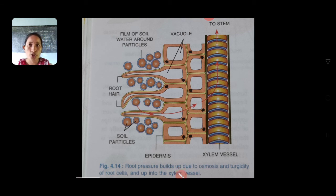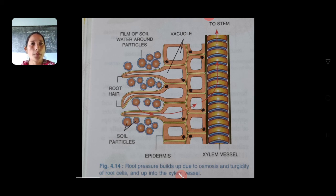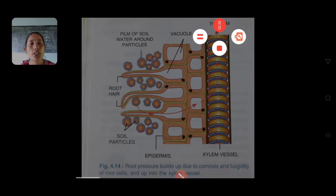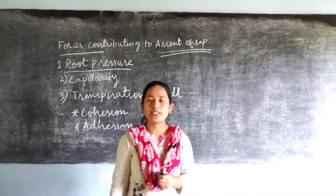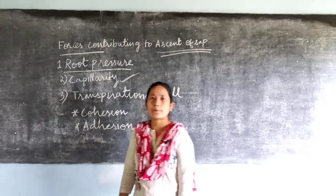Root pressure is caused by the continuous movement of water from the soil into the cell, and because of that continuous osmosis and the entry and exit of water, pressure builds up in the root — that is referred to as root pressure. Now we will discuss other forces resulting in the ascent of sap: capillarity.